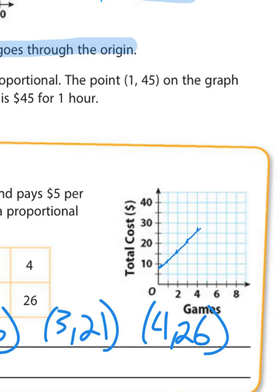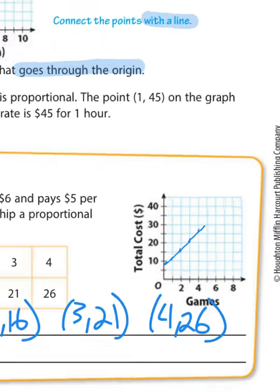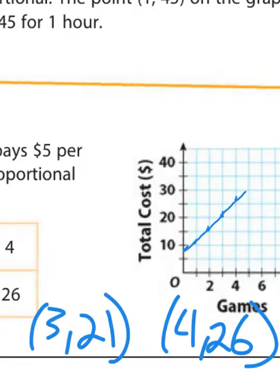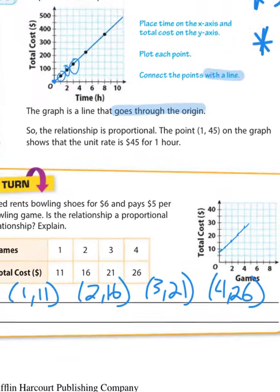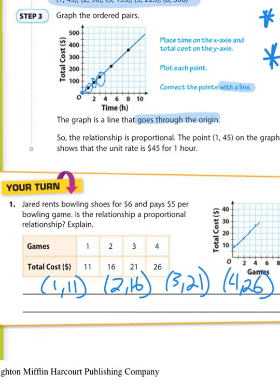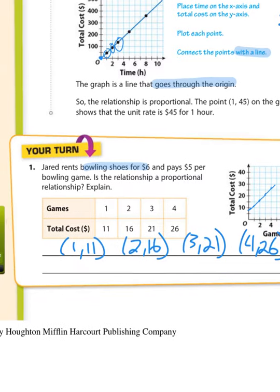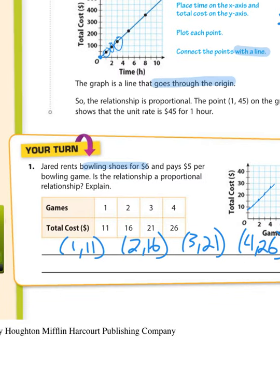When I connect these dots, it is a straight line, but it does not go through the origin. In fact, we know exactly where it starts. It starts at $6 because he had to pay for bowling shoes before playing a game. Because it doesn't go through the origin, it doesn't start at 0, 0, this is not a proportional relationship. So no, even though it's a straight line, it doesn't go through the origin, not a proportional relationship.